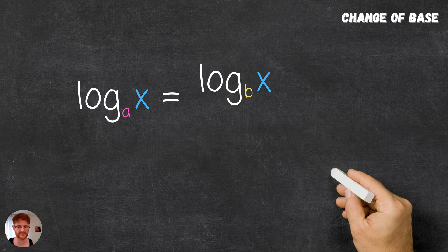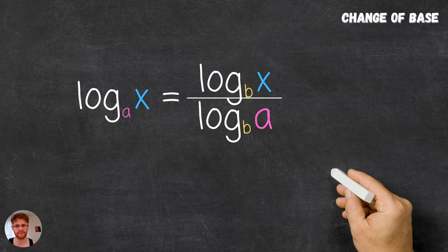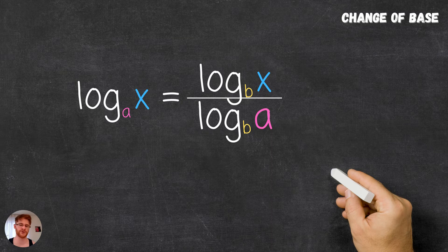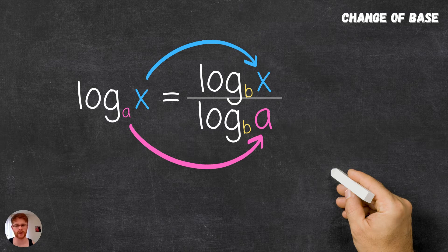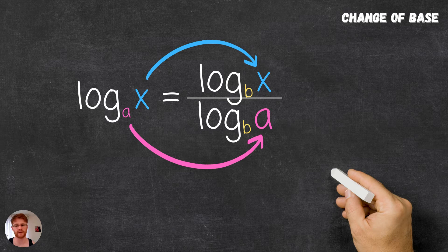In the numerator we have the log with the new base b of the exponential x, and in the denominator we have the log again with the new base b, but now where the exponential is the base a from which we are changing.